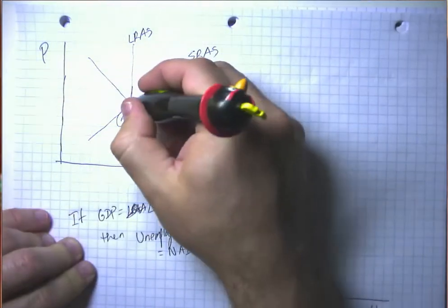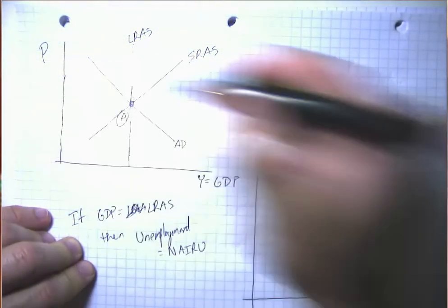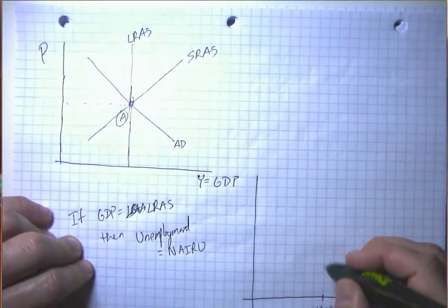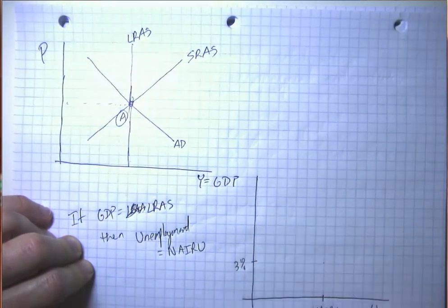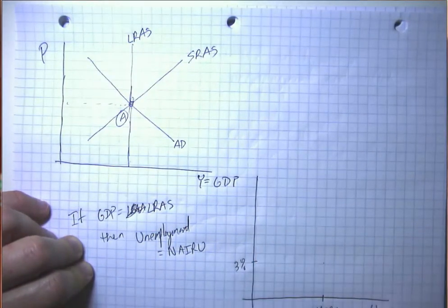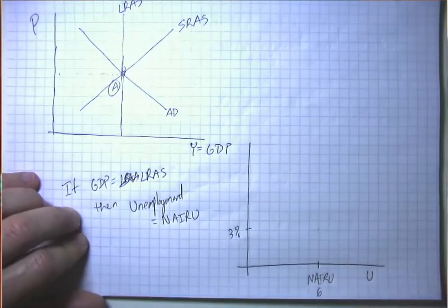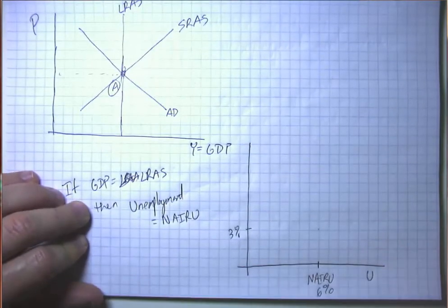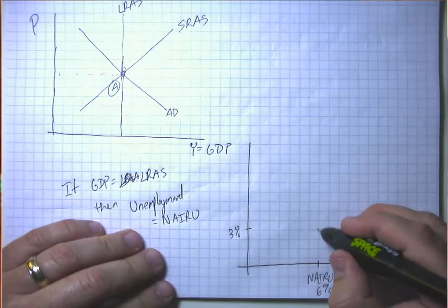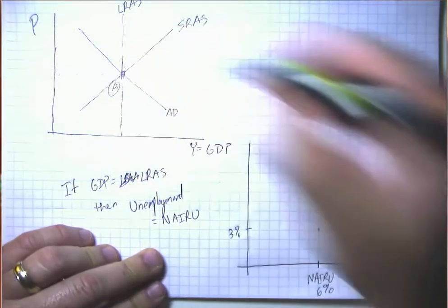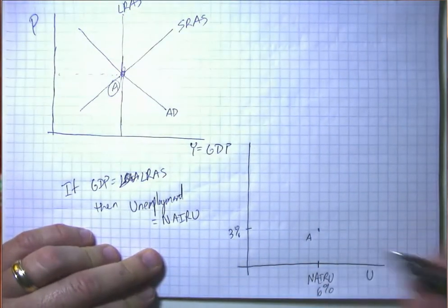And typically the economy experiences some background level of inflation, say 3%. And let's suppose that this NARU unemployment rate is 6%. So the point A in this diagram is this point A in that diagram.